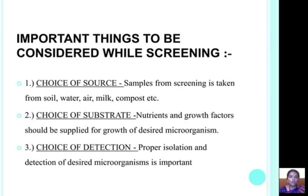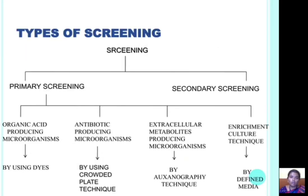There are three important things to be considered while screening. They are: choice of source, choice of substrate, and choice of detection. Choice of source means samples for screening are taken from soil, water, air, milk, compost, etc. Choice of substrate means nutrition and growth factors should be supplied for growth of desired microorganisms. Choice of detection means proper isolation and detection of desired microorganisms is very important.